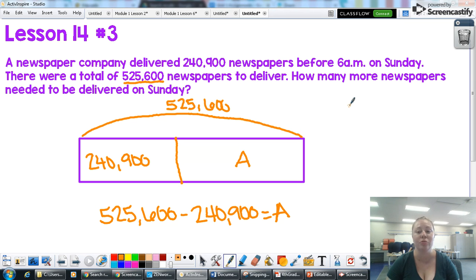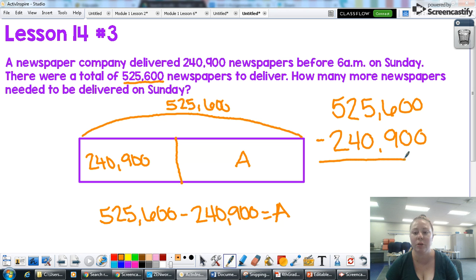Now I am going to write this up and down so I can solve. So 525,600 minus 240,900. Again, the first thing I want to do is check my digits and make sure that I am good to subtract. So zero is enough to subtract zero. Again, zero is enough to subtract zero. I have six here.